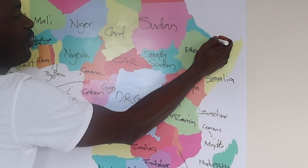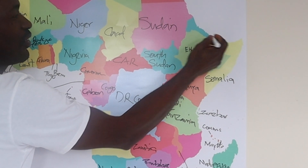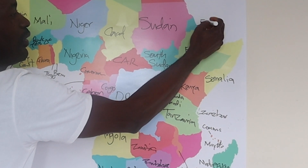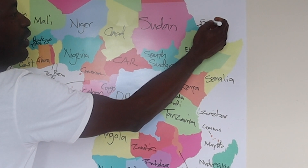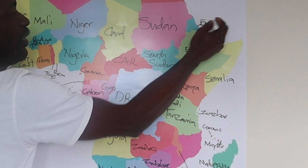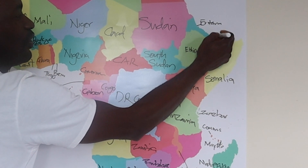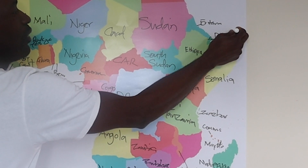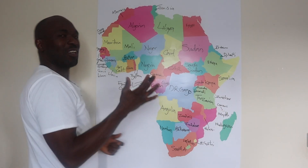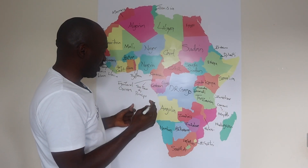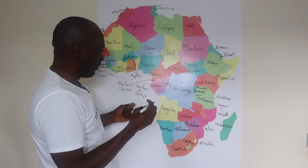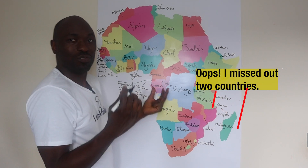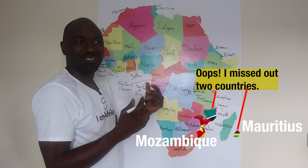And here we have two countries there. That is Eritrea. And then we have Djibouti. I think this is all the countries — I don't think I've missed any. And yeah, I think I've really done a great job. What do you think? I think I've done a great job.